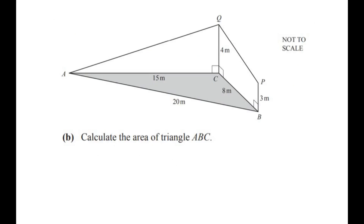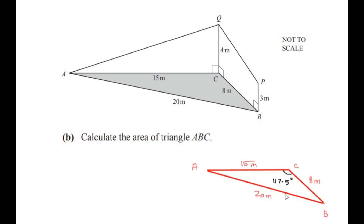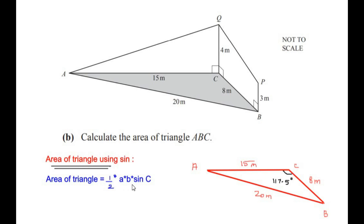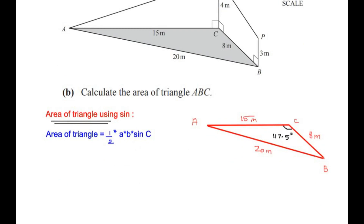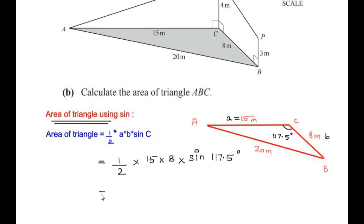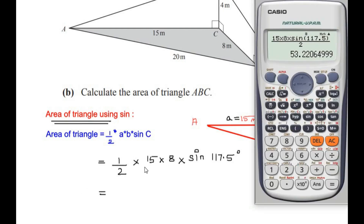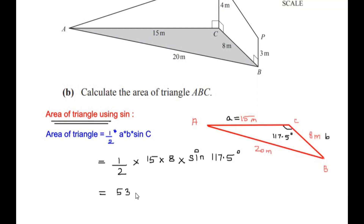Part B: calculate the area of triangle ABC. From part A we have angle C = 117.5 degrees. The formula for area of a triangle is: Area = ½ × a × b × sin C. The two sides with the inclusive angle are 15 meters and 8 meters. Substituting: ½ × 15 × 8 × sin(117.5°) = 53.22 square meters.